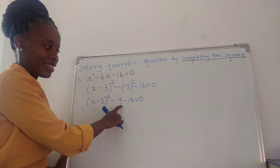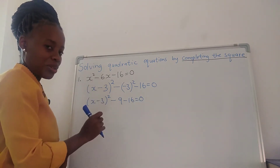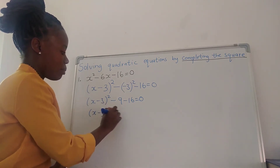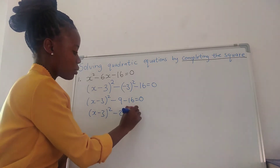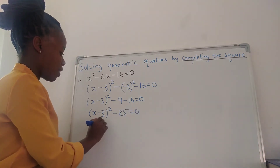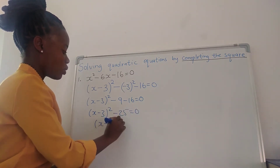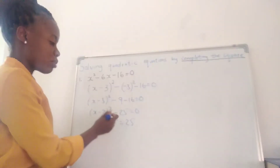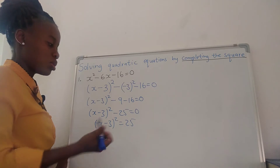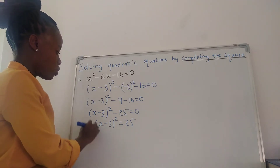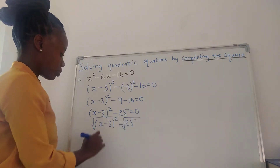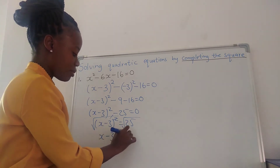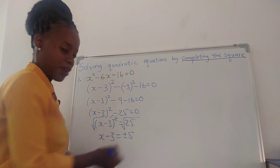So we're going to get x minus 3 squared minus 9 minus 16 equals to 0. Negative 3 squared is minus 9. So we're going to get x minus 3 squared minus 25 equals to 0. We take 25 to the other side. Now we're going to remove the square, so we square root both sides. This side we're going to have x minus 3, this side plus or minus 5.